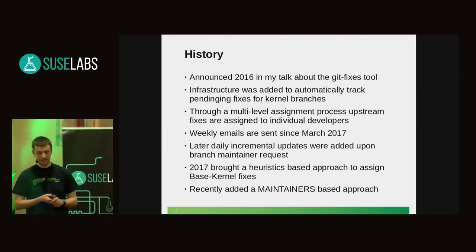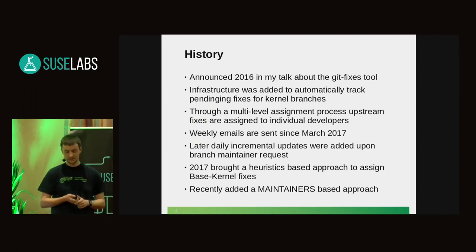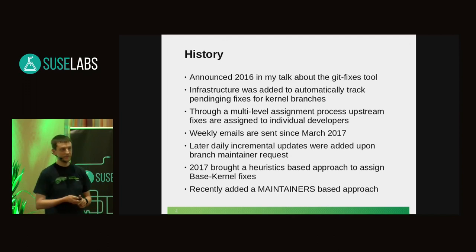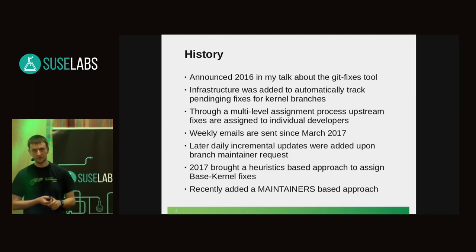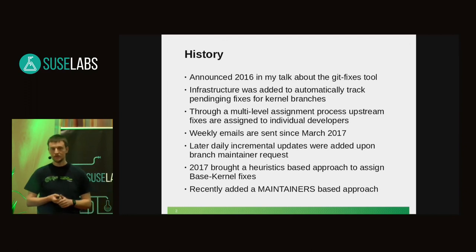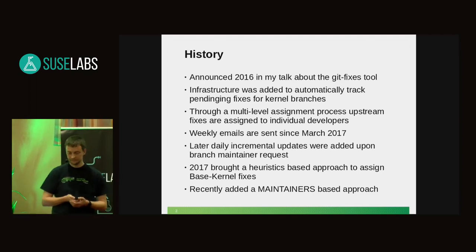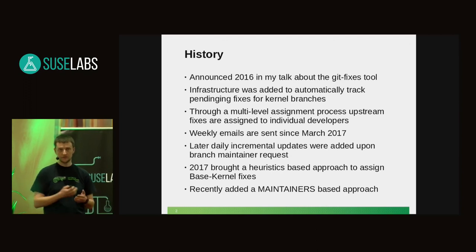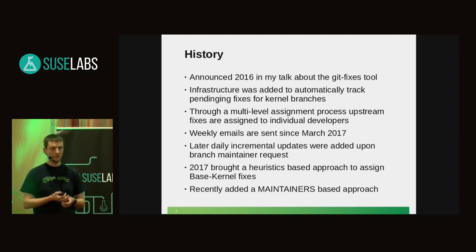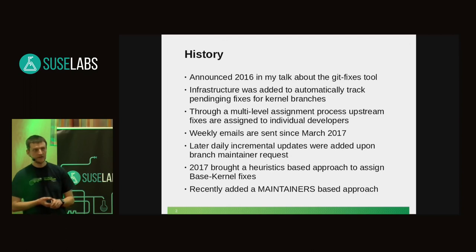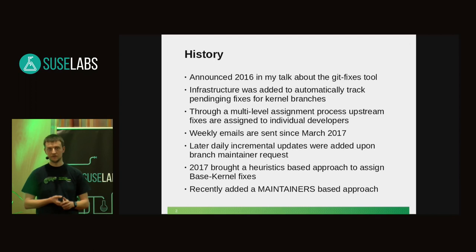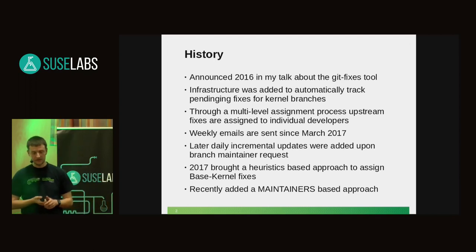The Git fixes tool was written by me in 2016 and I announced it here at the labs conference in a talk. Back then we agreed to have an infrastructure that sends out regular emails to everyone with potential fixes for people to check and to backport to our kernel branches. Initially this only split the patches up between patches sent to individual developers and patches for the base kernel commits. The emails were sent weekly. A little while after we started, branch maintainers asked for incremental daily updates so that if a super important fix comes in, we don't have to wait a week to notice and backport it. This is how the daily incremental updates came to be.